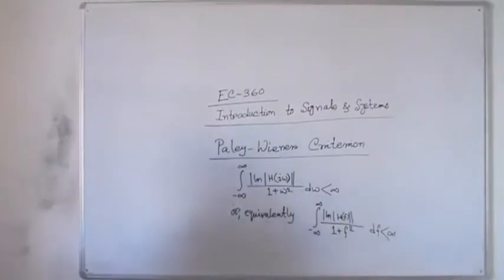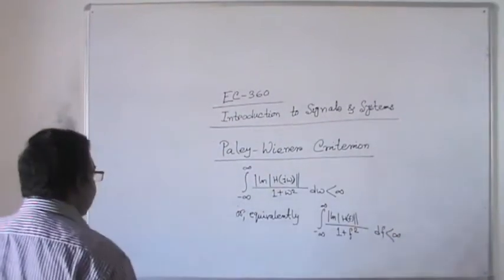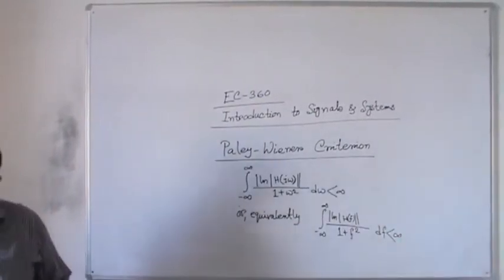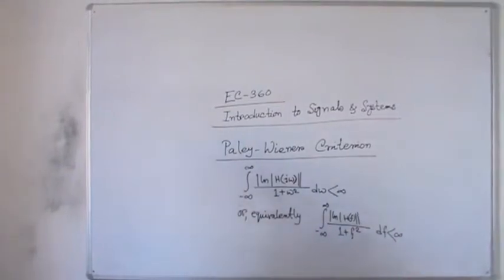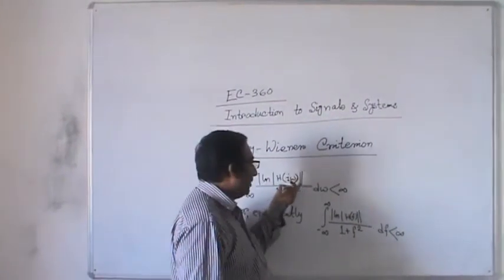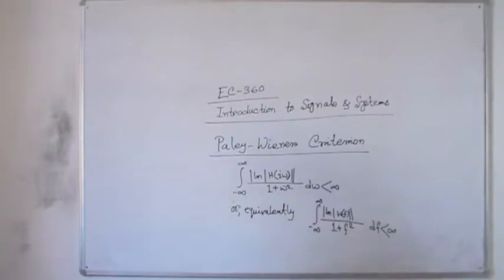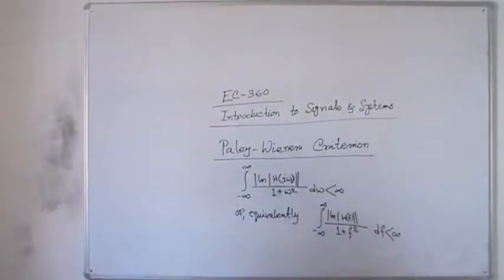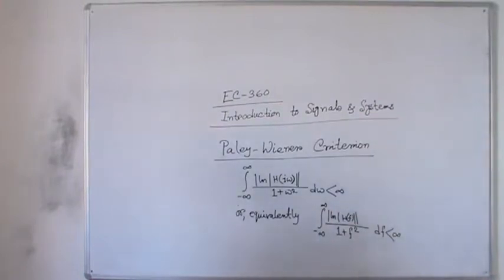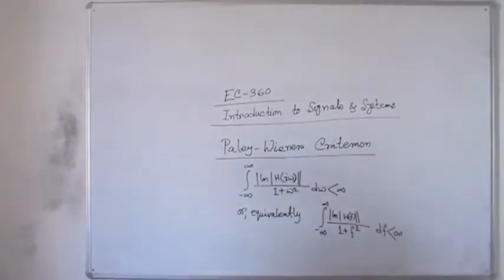This is the expression for the Paley-Wiener criterion. The Paley-Wiener criterion states that the modulus of the frequency response, or the amplitude response, is an even function of frequency. Whereas the phase angle, that is the phase response, is an odd function. This is a very important thing.